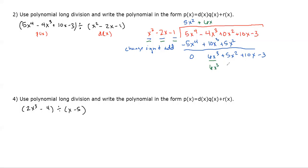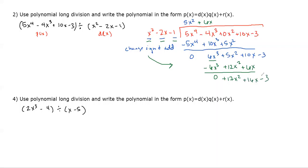Multiplying 6x by (x² − 2x − 1): 6x · x² = 6x³, 6x · (−2x) = −12x², and 6x · (−1) = −6x. Change signs and add — the cubic term cancels. 12x² + 5x² gives 17x², then 10 + 6 gives 16x − 3.